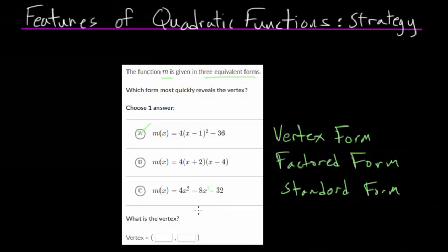So all of these forms have different uses. The vertex form obviously will give us the vertex very quickly. In fact, in this case our vertex is the x value that makes this expression zero. So it'd be one in this case because if you put in one here this all goes away and it's just zero, and then the y value is negative 36.